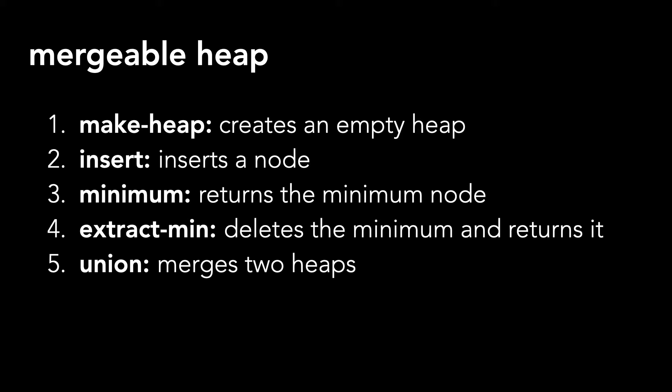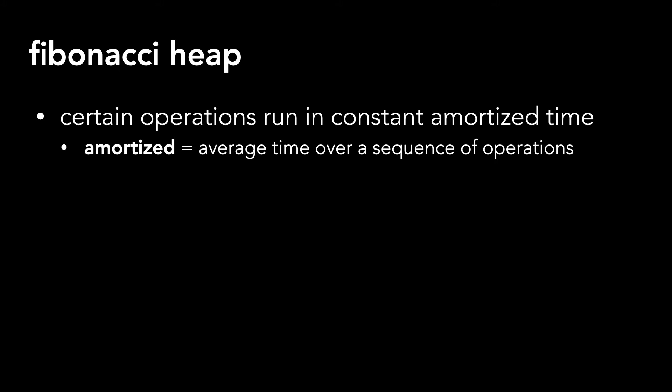We've previously covered binary heaps on this channel, but Fibonacci heaps are beneficial in specific situations. This is because certain operations run in constant amortized time. Amortized is similar to average, but it's the average time over a sequence of operations. In other words, it's the average performance of each operation in the worst case.